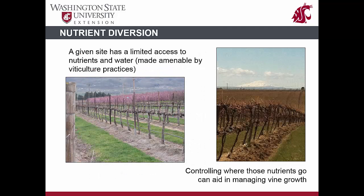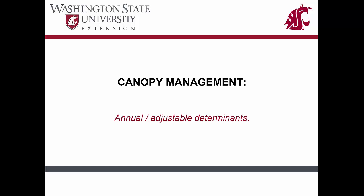The main principle behind nutrient diversion is that a site has limited access to nutrients and water. Depending on how that access level is relative to what is required for vine growth, cover crops can aid in diminishing that supply without simultaneously competing for sunlight. The more well-known canopy management techniques are those that need to be done on an annual basis. In many cases, these annual adjustments are means to fine-tune the permanent adjustments discussed before. In other cases, these annual adjustments are necessary because permanent adjustments were never initially considered.